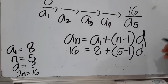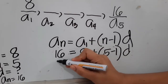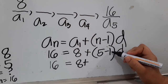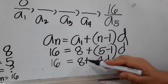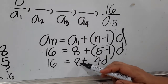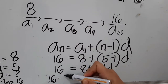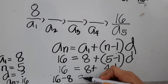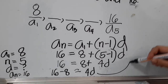Applying PEMDAS, we simplify inside the parentheses first. This becomes 16 equals 8 plus 4d. Since we have the constants 16 and 8, we combine them by applying the subtraction property of equality — subtracting 8 from both sides — giving us 16 minus 8 equals 4d.